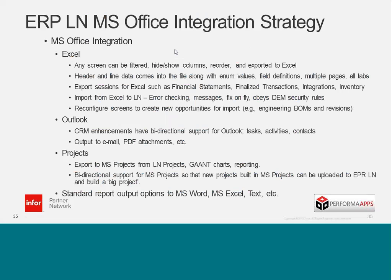You can also do the header and line data. This is a big difference with Bond 5 — when you export things, you only get the line data, and you don't get things like the enumerated values, you don't get the labels, you don't get the field definitions, and you don't get multiple pages. You'd have to go through page by page and export each page out to a spreadsheet and combine them. Now you have the ability to just filter a list and export everything that's in your view.